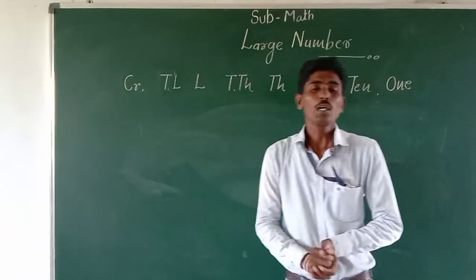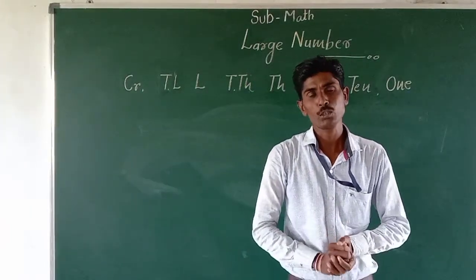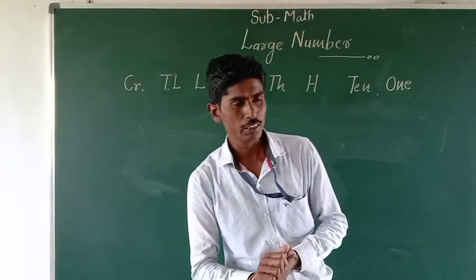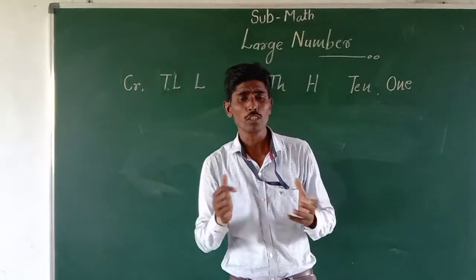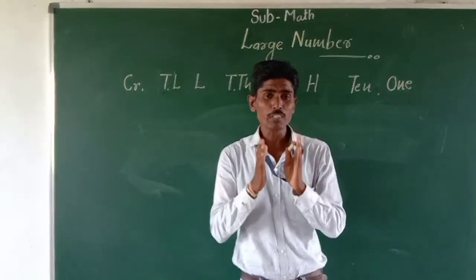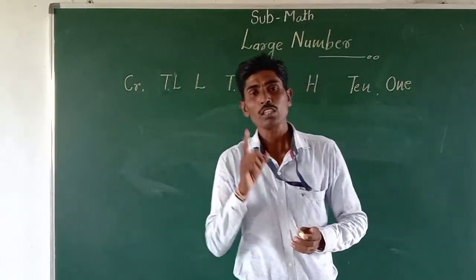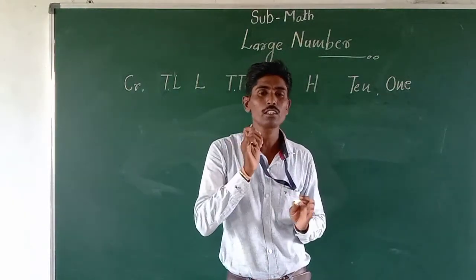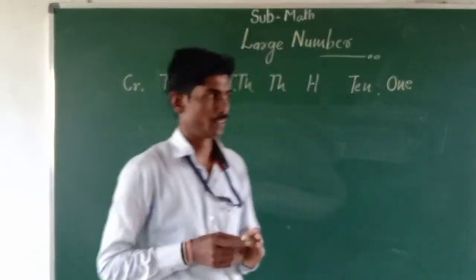After that, we will discuss about place value and face value. The question is: what do we call place value and what do we call face value? Face value means the exact value of that digit. Place value means the value of a digit according to its position or place in the number.